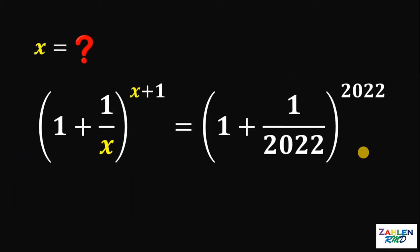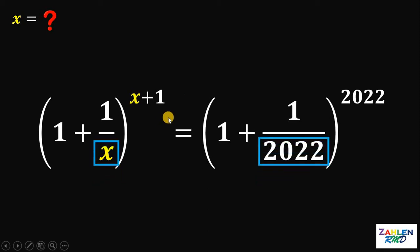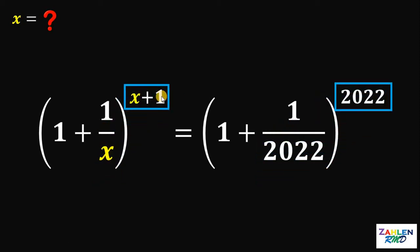Let's answer this question together. Our goal is to solve for the value of x. Notice on our given, the only problem we have is these terms — we have x, and this is raised to x plus 1. And on the right-hand side, we have 2022 raised to 2022.